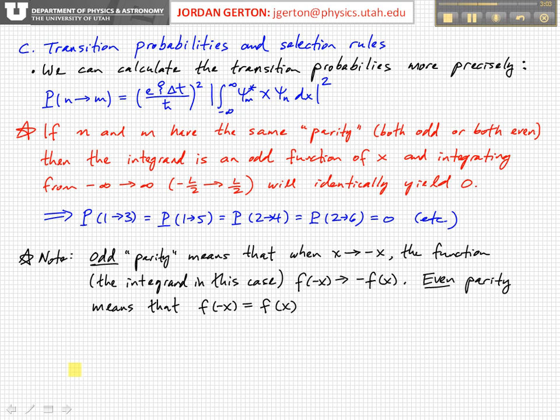All right, so if n and m have the same parity, that is, they're both odd or they're both even, then the integrand is an odd function of x, and integrating over the symmetric boundary range will identically yield 0. So that means the transition, the probability for the transition from 1 to 3, between 1 and 3, 1 and 5, 2 and 4, 2 and 6, etc., is identically equal to 0 in this approximation. This is, again, this is approximation, this is perturbation theory, it's not exact. It's a good approximation in many cases, but it's an approximation nevertheless.